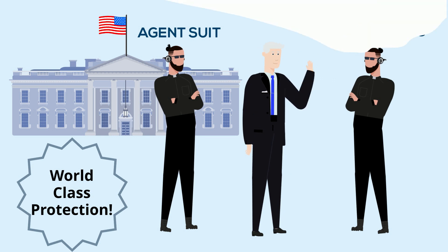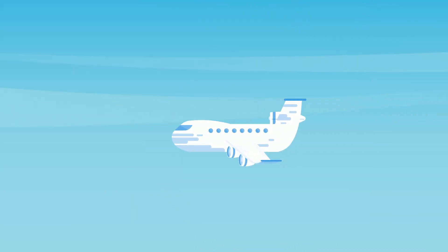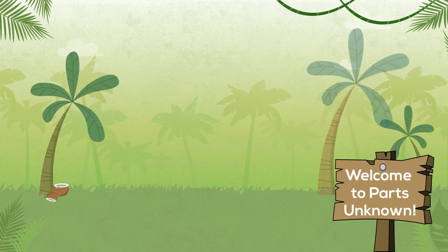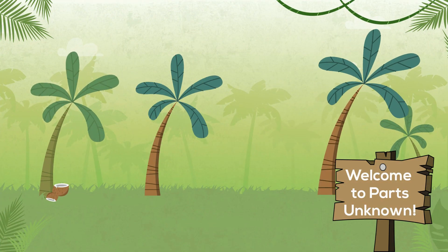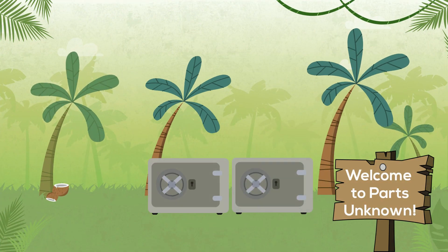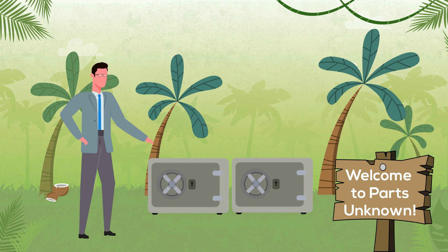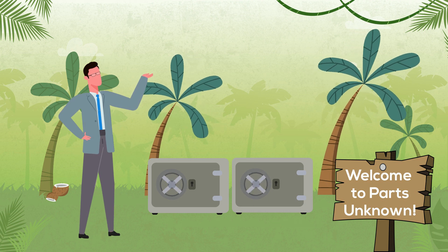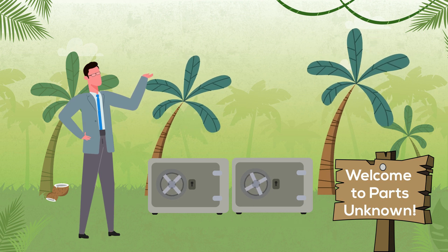Not good. This is why root CAs are typically kept offline in a secure, undisclosed location and are only ever turned on by the PKI team when a new issuing CA is being issued or a CRL is being signed.